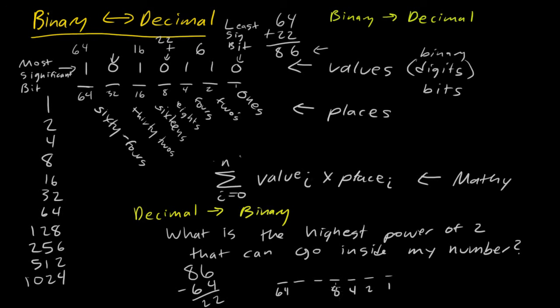So 16 and then 32. We got every bit over here. So I'll write down a 1 over here. We're saying, okay, what is the highest power of 2 that can go into this number? So 86. The highest power of 2 is 64. So we write a 1 out there. So now our number is 22.